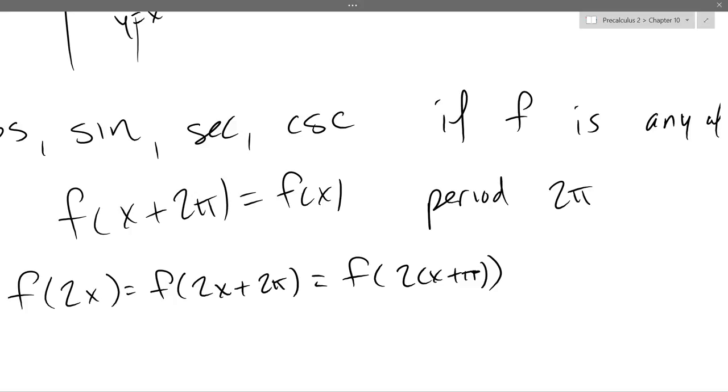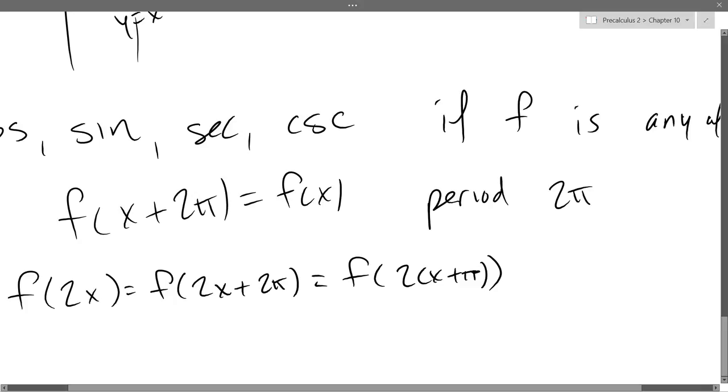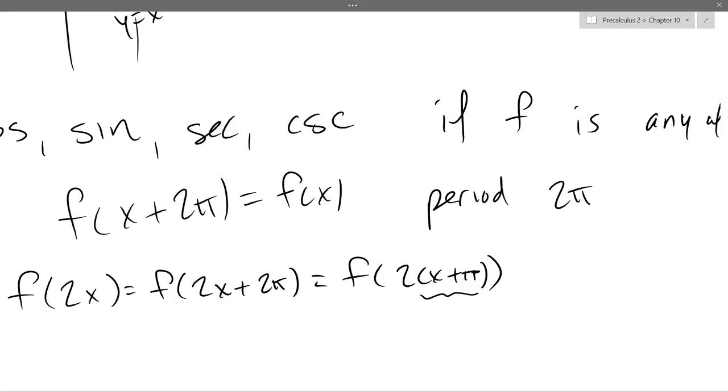If you instead had 2x instead of just x, this is algebraically how it behaves. You can see the original period was 2π, but if you treat it like this, you'll see the period looks like it's π. And so that's how our graphs went from period of 2π, then they got cut in half, so the period is just π.